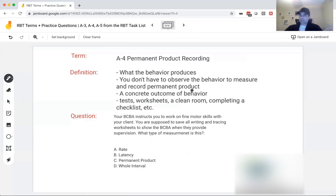Let's get to A4, permanent product. Again, something that's very simple and straightforward, but it's a little tough to grasp at first. Permanent product recording, you're looking at what the behavior produces. A concrete outcome of behavior. The key is you don't have to observe the behavior to measure and record permanent product. So for continuous measurement, discontinuous measurement, we actually need to watch the behavior happen. We have to see it happen. For permanent product, our behavior is producing something, a concrete outcome where I can come back in two hours and record what happened as a result of the behavior.